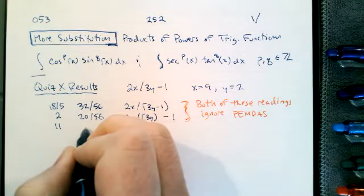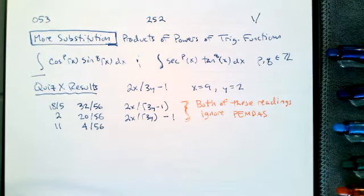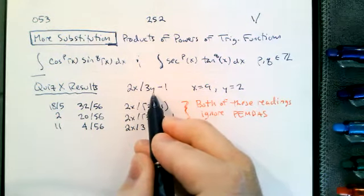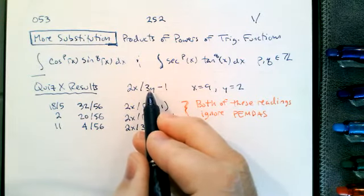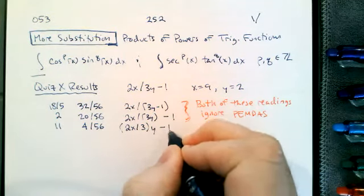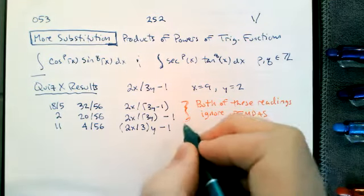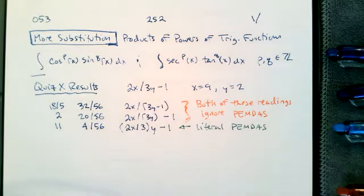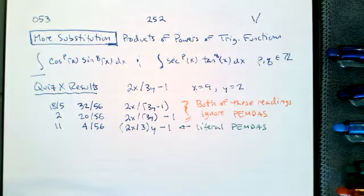Four of you followed PEMDAS strictly. Two of those four showed their calculations: they read it as 2x divided by 3, then multiply by Y, then subtract 1 — because in PEMDAS, multiplication and division go in order from left to right. This is a strict, literal reading of PEMDAS. Notice that literal PEMDAS is a loser by a wide margin — 52 out of 56 respondents did not follow literal PEMDAS.